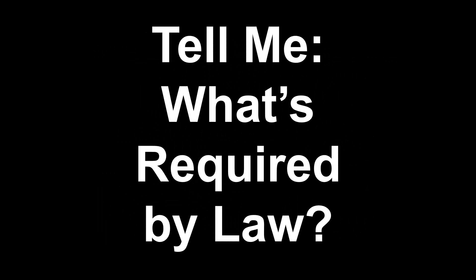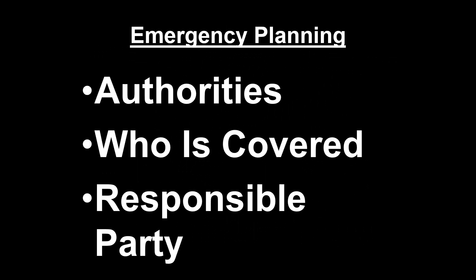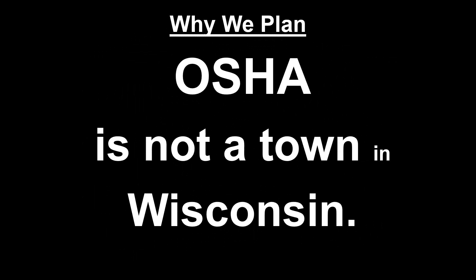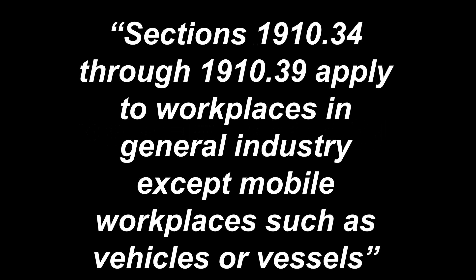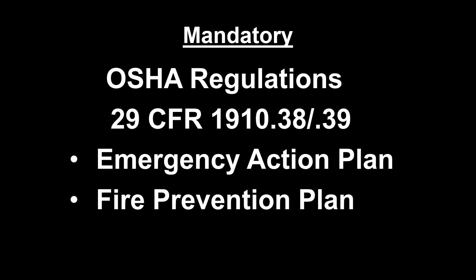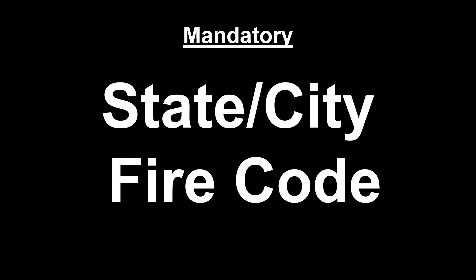What's required by law? OSHA — the Occupational Safety and Health Agency — has been writing regulations for employee safety for over 40 years. 29 CFR (Code of Federal Regulations) 1910.34 applies to workplaces in general industry — all of you, unless your facility is on a boat or truck. 29 CFR 1910.38 requires a written emergency action plan; 1910.39 requires a written fire prevention plan. These apply over and above any local laws, and city and state fire codes add additional requirements.